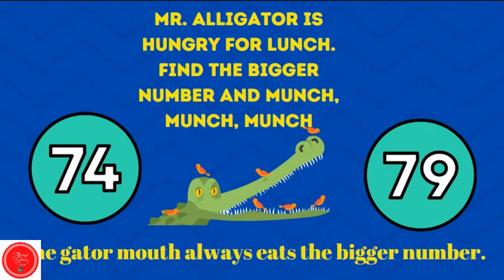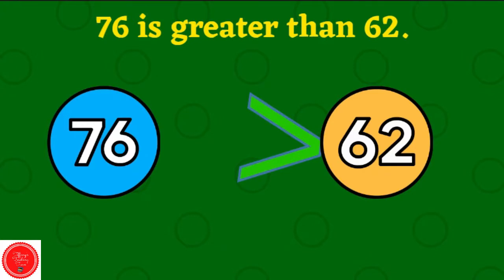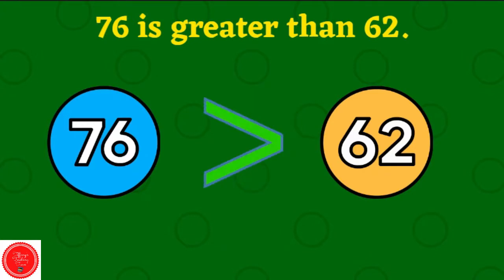Mr. Alligator is hungry for lunch. Find the bigger number and munch, munch, munch, munch. The gator mouth always eats the bigger number. 74 is less than 79. 79 is the bigger number. So that's the number the mouth is going for.